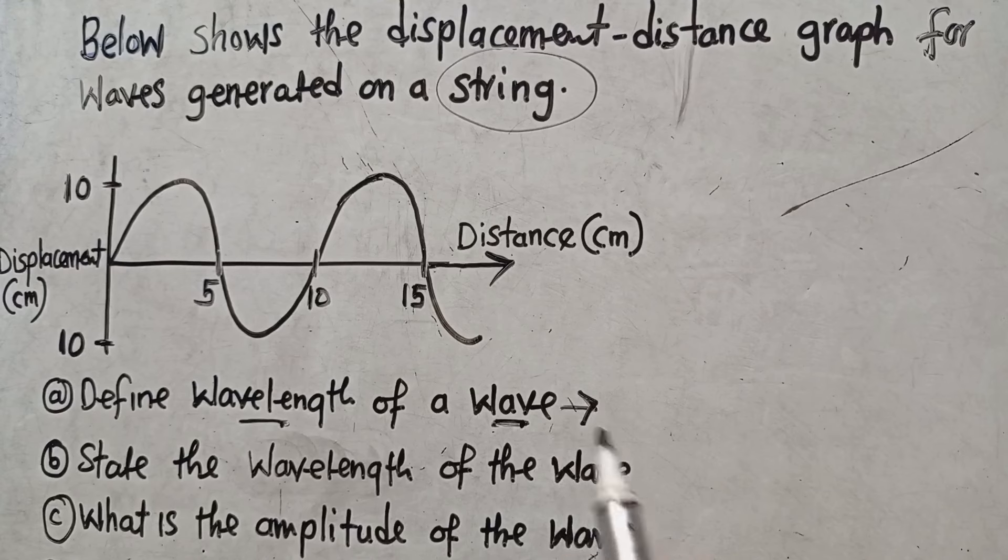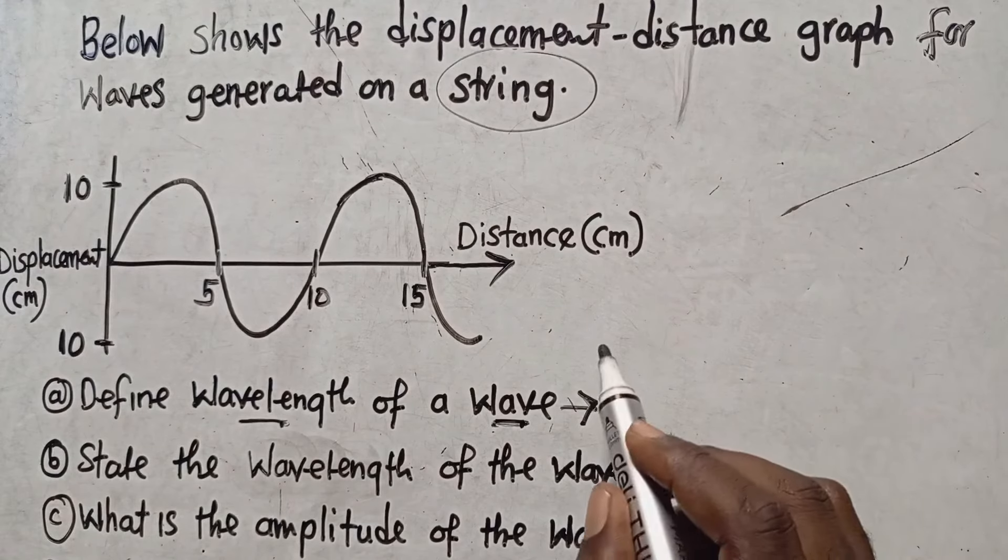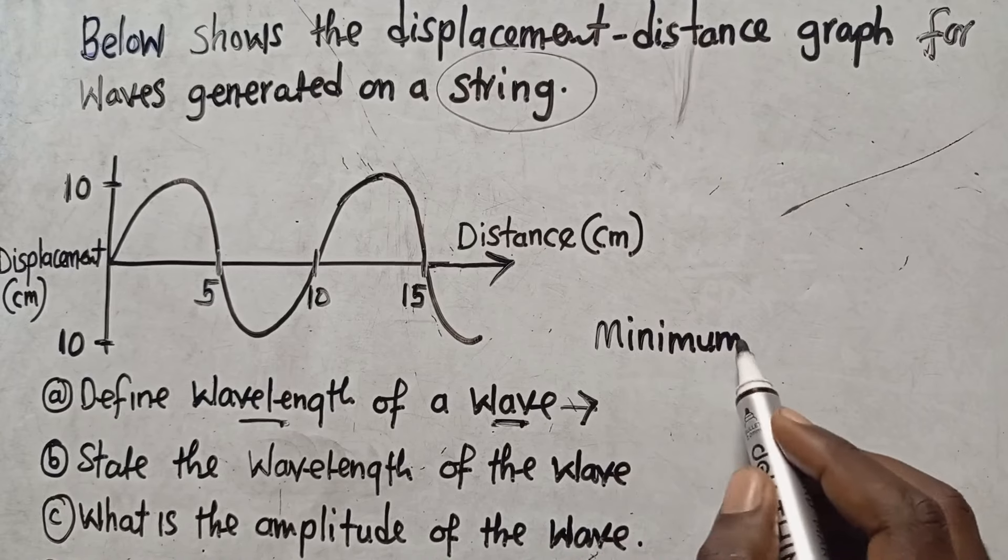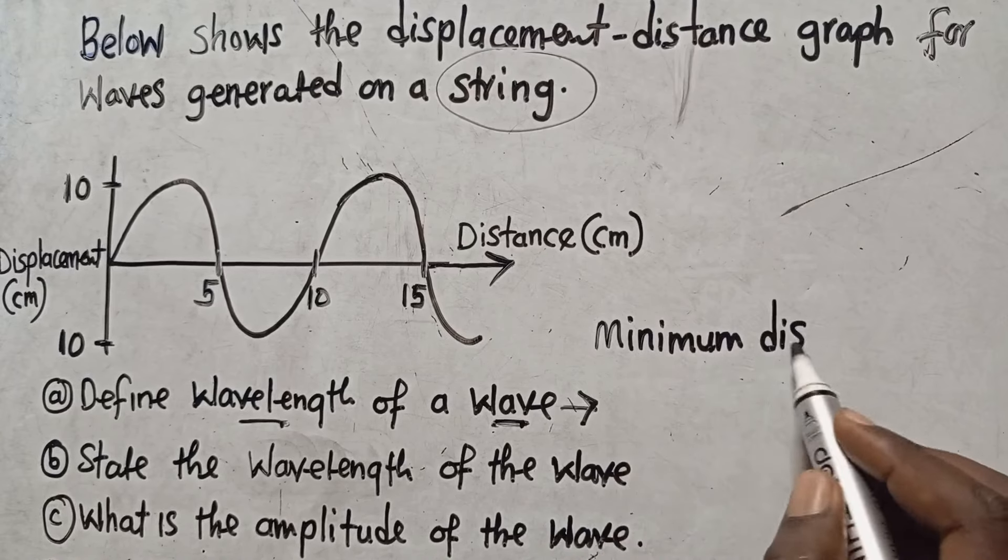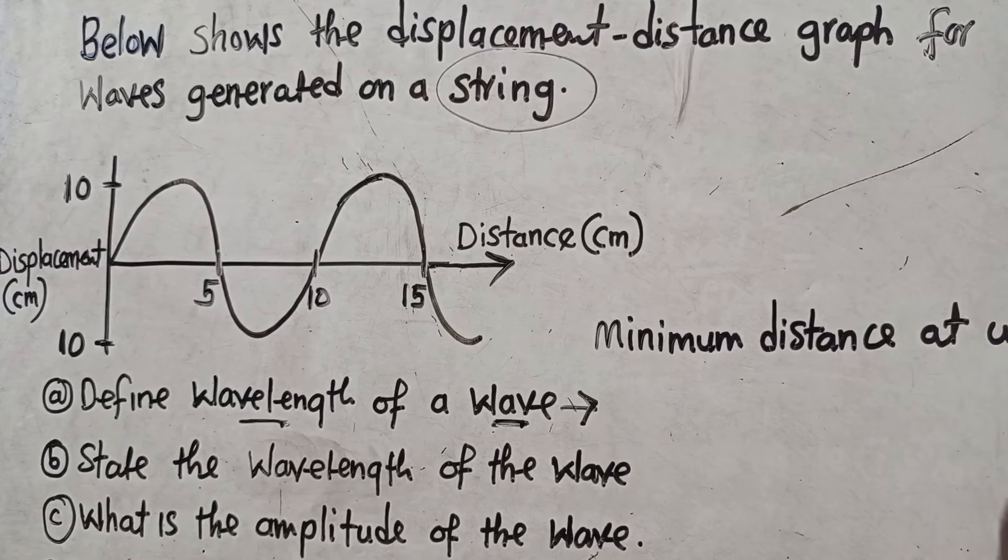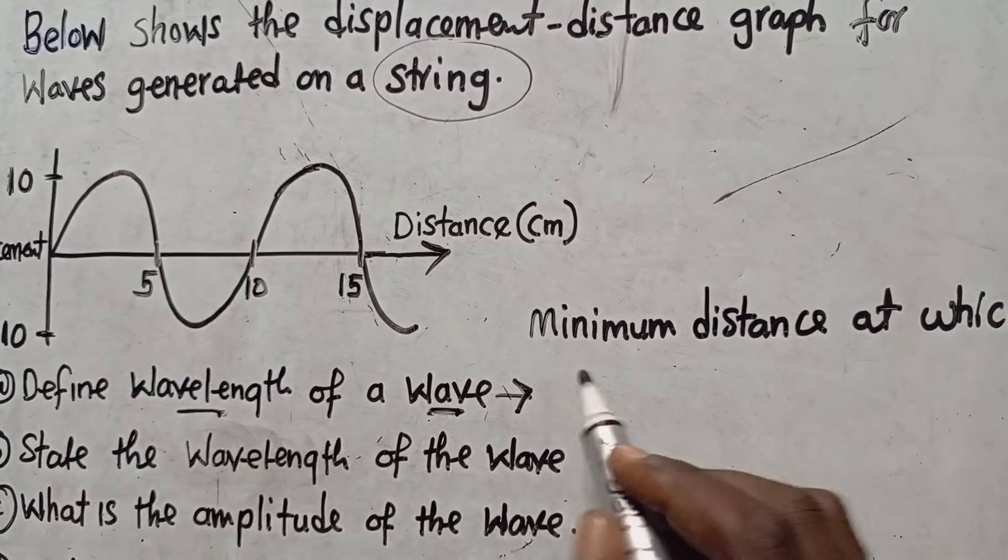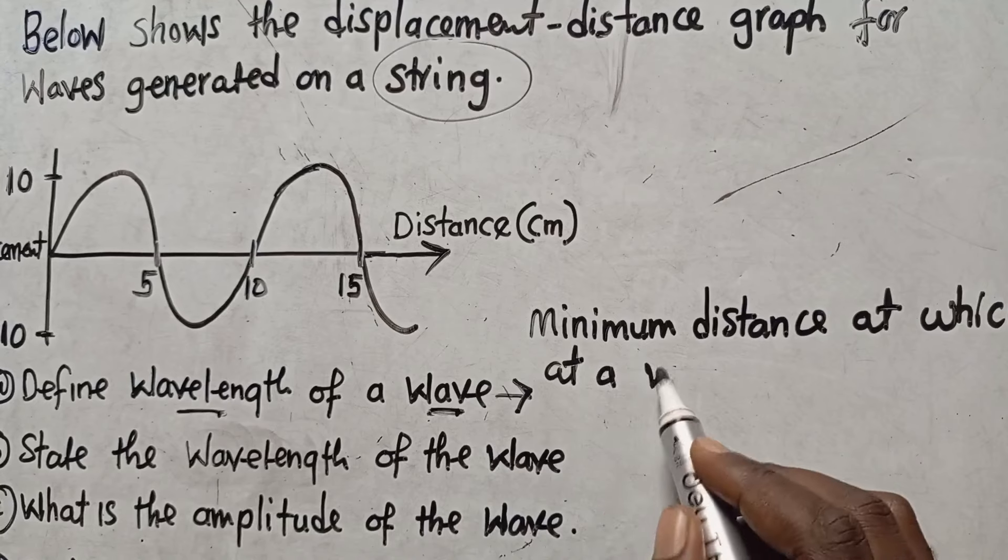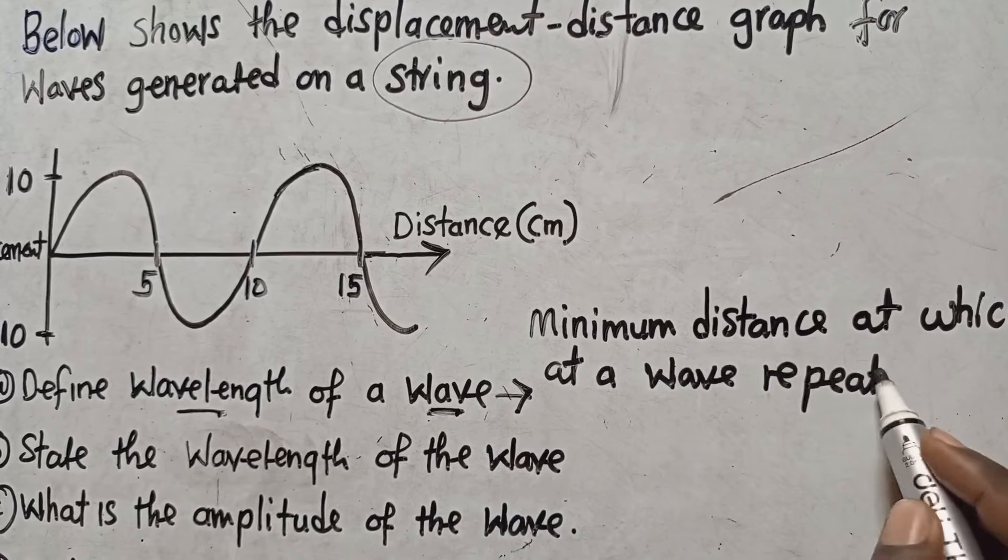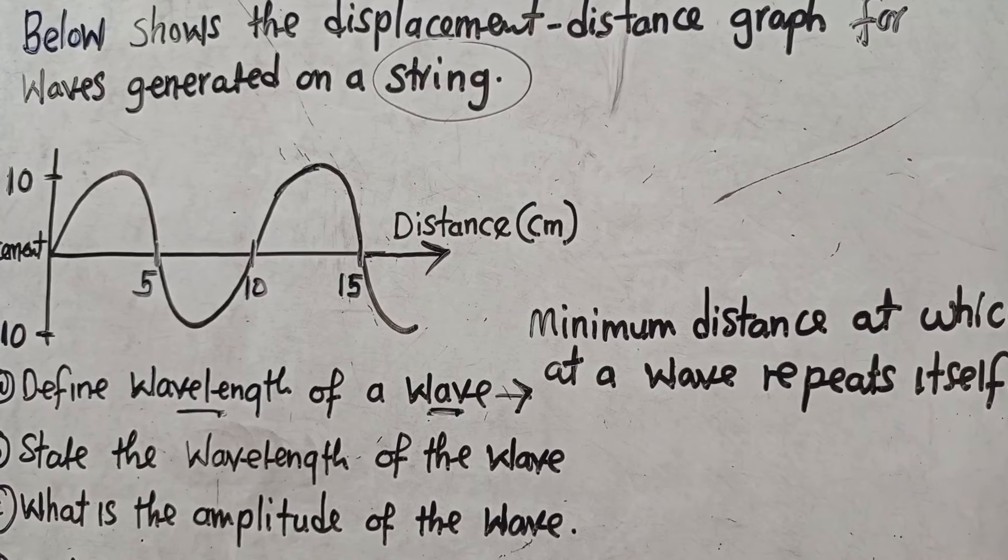So here define wavelength. What is wavelength? Wavelength is a minimum distance at which a wave repeats itself.